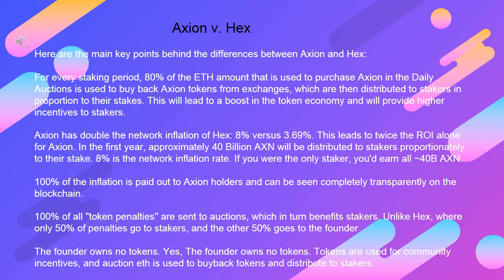100% of all token penalties are sent to auctions, which in turn benefits stakers. Unlike HEX, where only 50% of penalties go to stakers, and the other 50% goes to the founder.